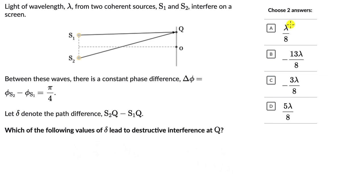We can see the options are in forms of λ. So first let's change π/4 in terms of λ. When we do that, this will be λ/2π times π/4. This becomes λ/8. So the path difference between these two waves in terms of wavelength is λ/8.